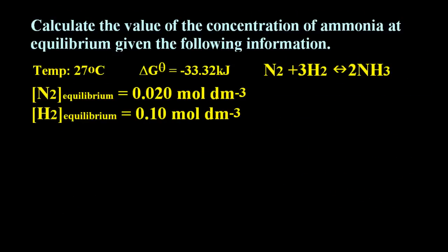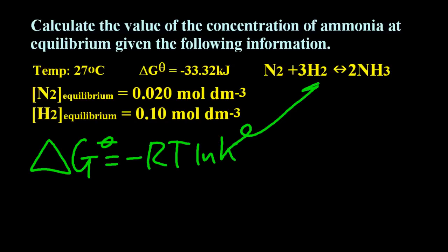Okay, let's try another one. Calculate the value of the concentration of ammonia at equilibrium given the following information. Well, I suppose we better plug and chug that into our equation. Delta G theta is negative RT ln K. And I can get the equilibrium constant because I've got the equilibrium equation.